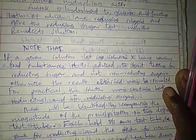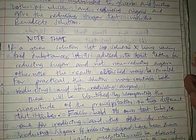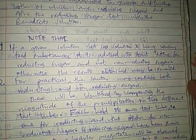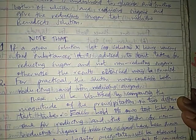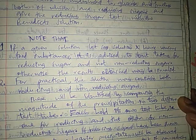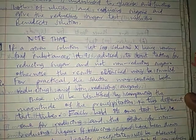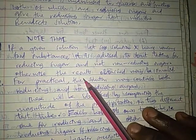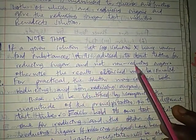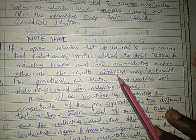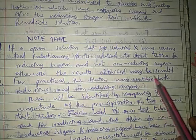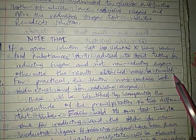Note: for a given solution, let's say solution X, which has various food substances, it is advisable to start by testing for reducing sugar before non-reducing sugar. Otherwise, the results obtained may be invalid.